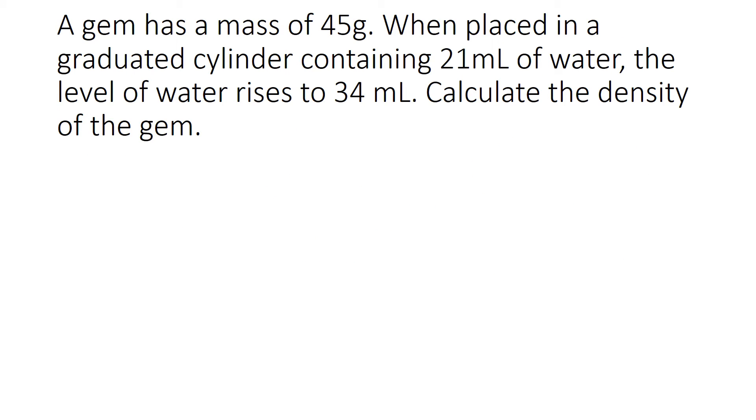Here we have a density problem. We are told that a gem has a mass of 45 grams. So m is equal to 45 grams. When it's placed into a graduated cylinder containing 21 milliliters of water, the level of water rises to 34 milliliters. They want us to calculate the density of the gem. I know the density is equal to mass divided by volume.